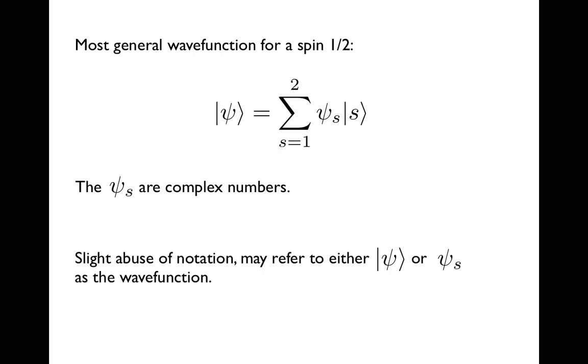Now the most general wave function that one can write for this single spin 1/2 degree of freedom is simply a wave function that's any linear combination of these two single-site states. So this linear combination means that we have two complex numbers, which we call here ψ_s, and the s runs from 1 to 2.